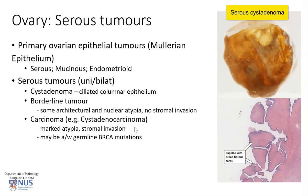Malignant tumors can be recognized grossly by the presence of solid fleshy areas, and often invasion through the wall of the ovary, and sometimes the serosal surface or other areas of the peritoneum. Serous carcinomas may also be associated with germline BRCA mutations, so there may be other tumors that these patients have, including breast tumors, for example.